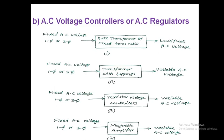The second method is a transformer with tappings: different tappings give different voltage levels, providing variable AC voltage. The third method uses thyristor voltage controllers — AC voltage controllers with thyristor switches. By controlling those switches for different firing angles, we get different variable AC voltages, applicable to single phase or three phase systems. The fourth method uses a magnetic amplifier, which amplifies electrical signals from fixed AC input to give variable AC voltage at output.